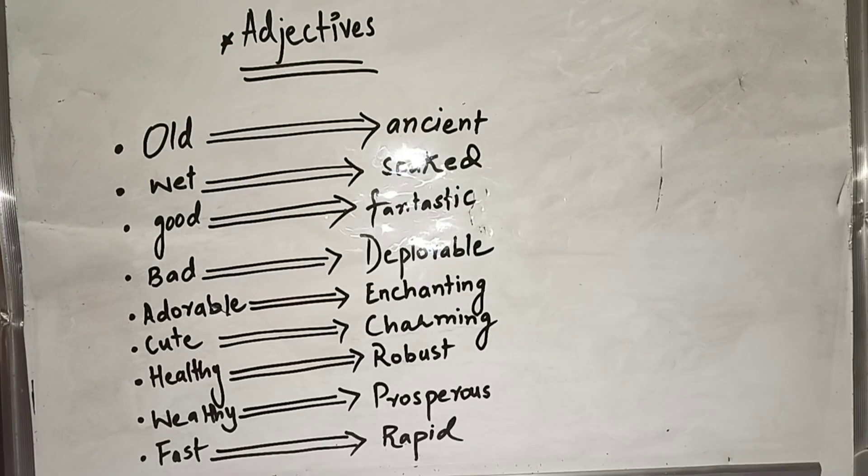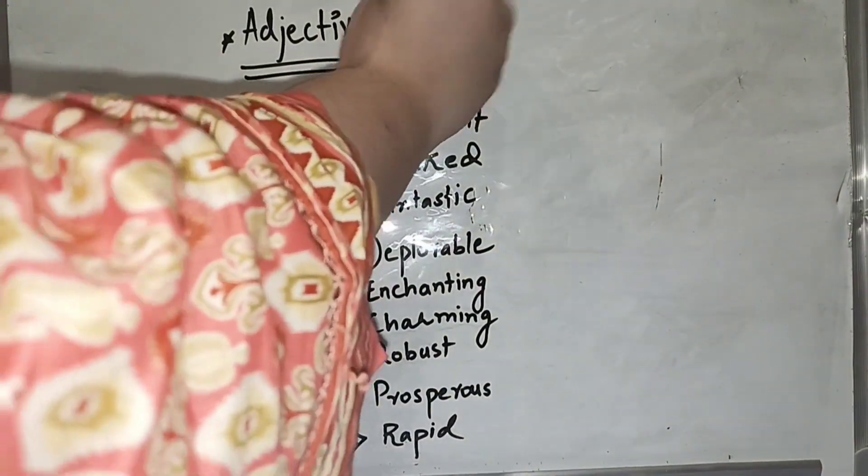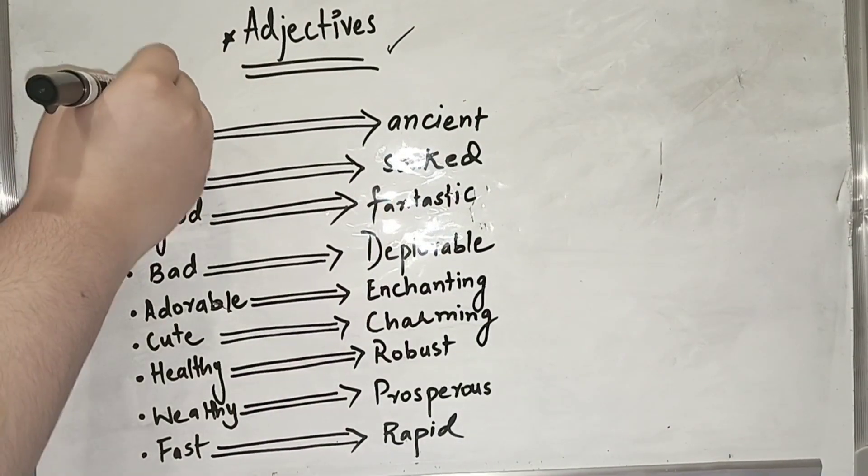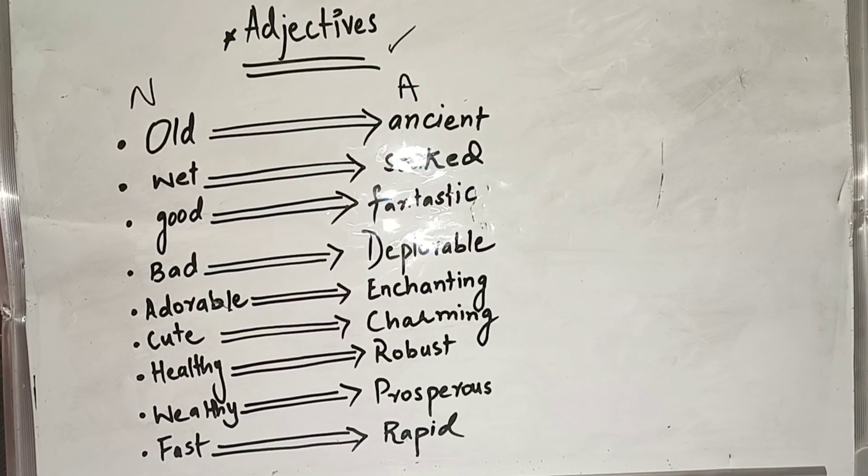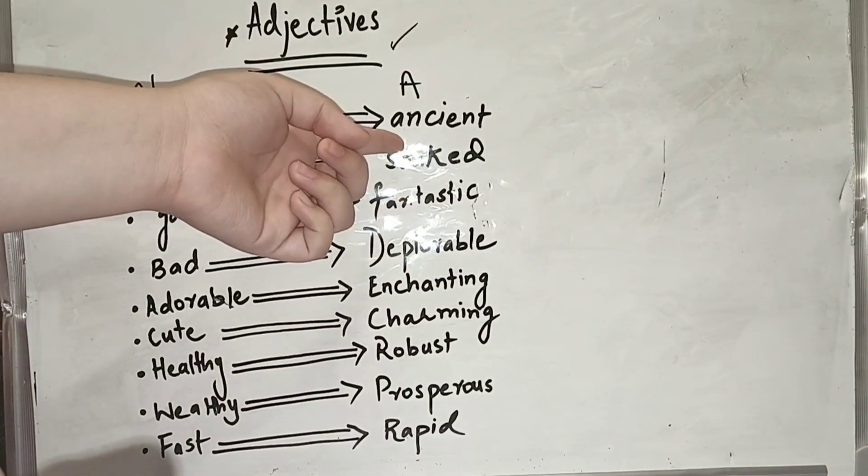We will use advanced versions of words in English. First of all, old - we will use the advanced version ancient. This is used for historical things.